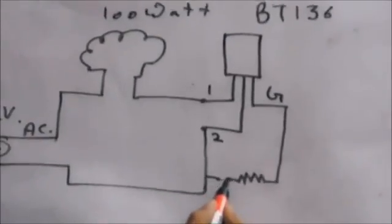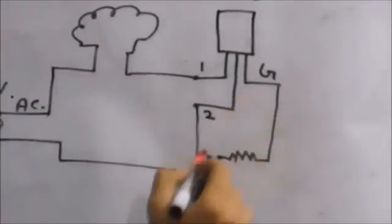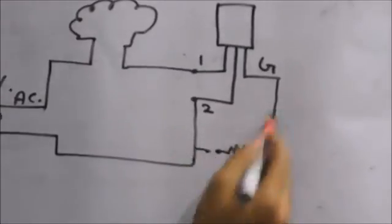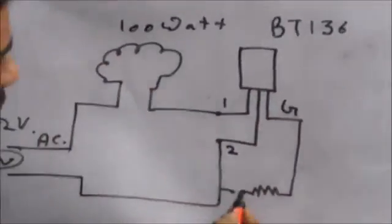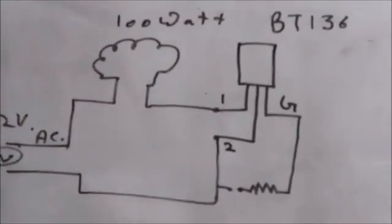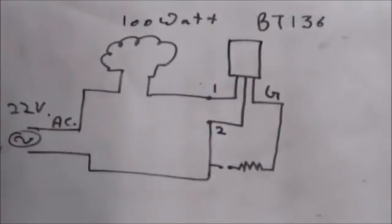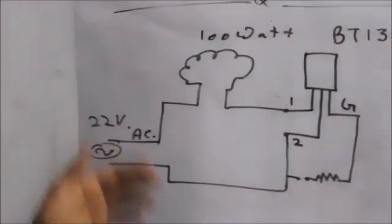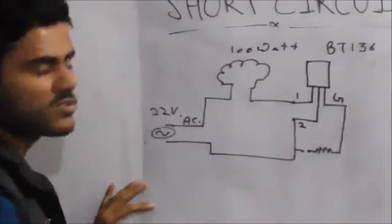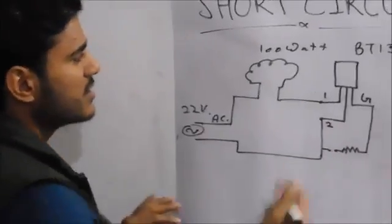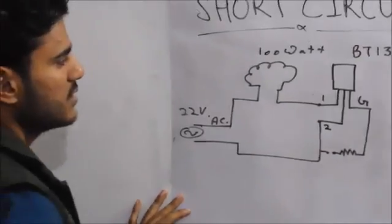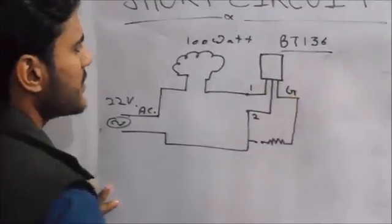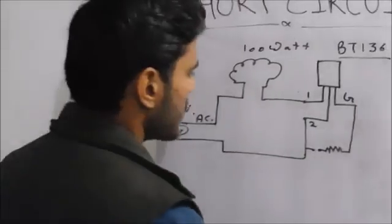If we connect these two points, current will flow through the gate and our bulb will glow. If we do not connect these two points, the bulb will not glow. This is just like a transistor switching circuit, but as we know, a transistor works only for DC — it doesn't work for AC. So if you want to switch AC, a better option is a triac.